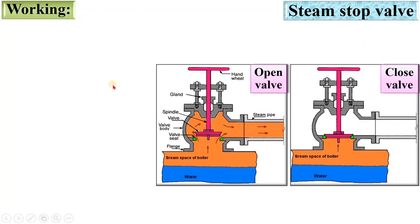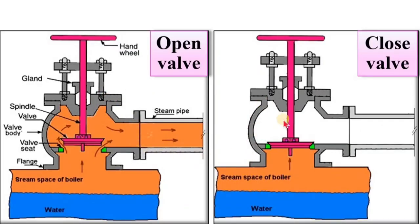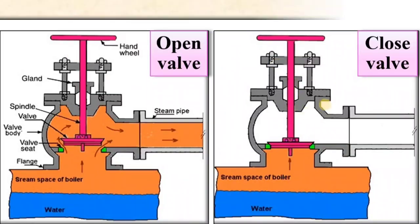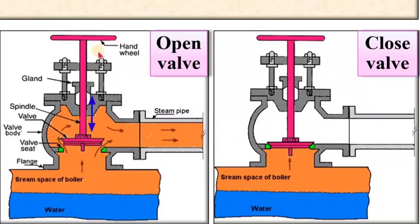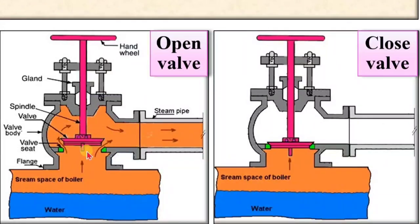Next, the working of the steam stop valve. Here you can see two different positions of the steam stop valve: one is in open condition and another is in close condition — simply on and off. By default the valve is in close condition and steam is not allowed to pass through the valve. When the spindle is rotated by the hand wheel, the valve moves up and down according to the direction of rotation. When the valve moves up, the steam in the boiler is allowed to pass through the steam stop valve from the boiler shell to the steam pipe.